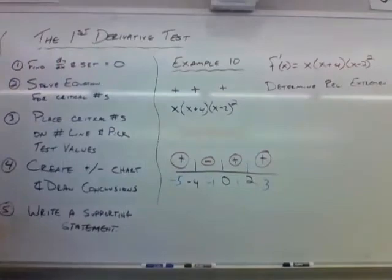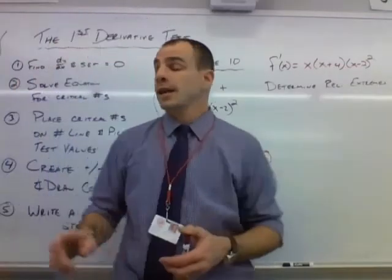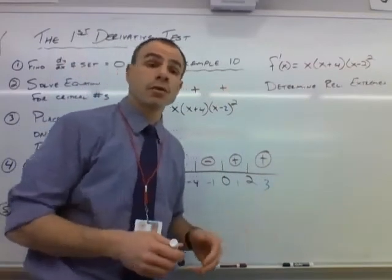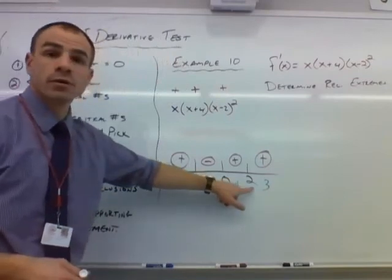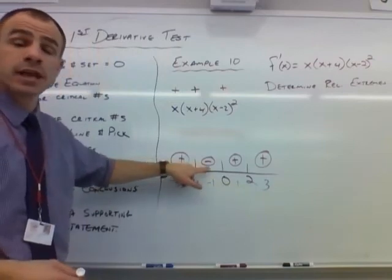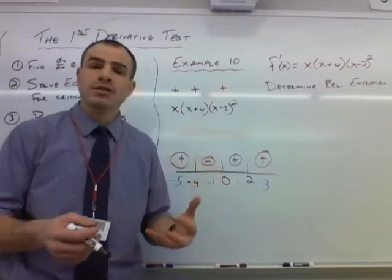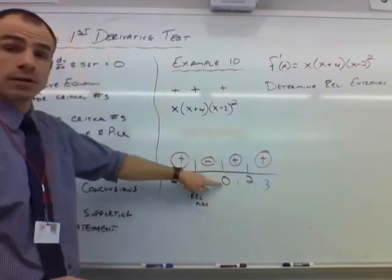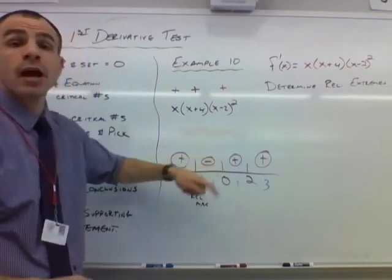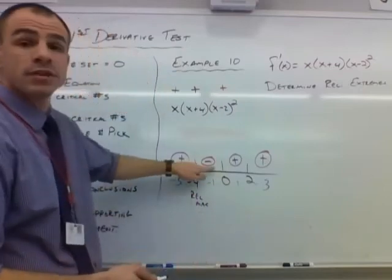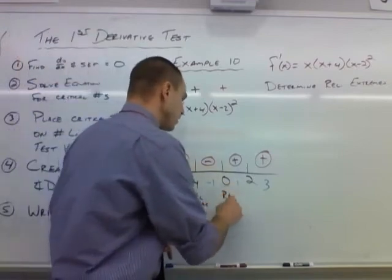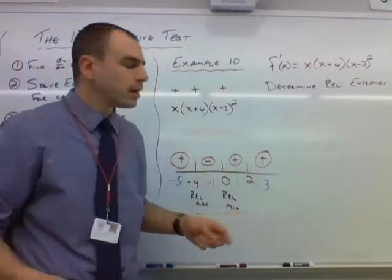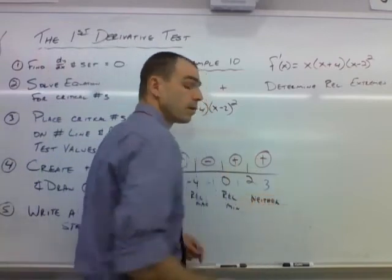That's our plus-minus chart — the first part of step 4. Now we draw conclusions. At x = −4, the derivative changes from positive to negative, which means f has a relative max. At x = 0, the derivative changes from negative to positive, so f has a relative min. At x = 2, the derivative is positive before and positive after — no change in sign — so this is neither a max nor a min.